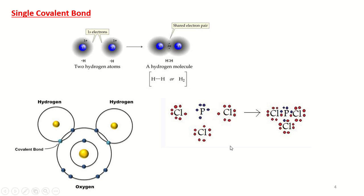The third example is PCl₃, phosphorus trichloride. Phosphorus has atomic number 15 with configuration 1s², 2s², 2p⁶, 3s², 3p³, giving 5 electrons in the valence shell. Chlorine has 7 electrons in its outer shell and lacks only 1 electron to complete its octet. When phosphorus and chlorine form a compound, they form a covalent bond through the sharing of electrons between phosphorus and chlorine, which satisfies each atom's octet.